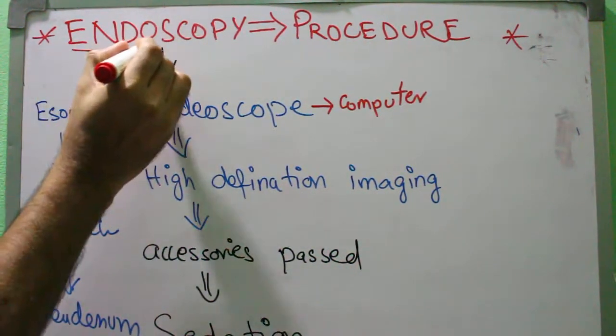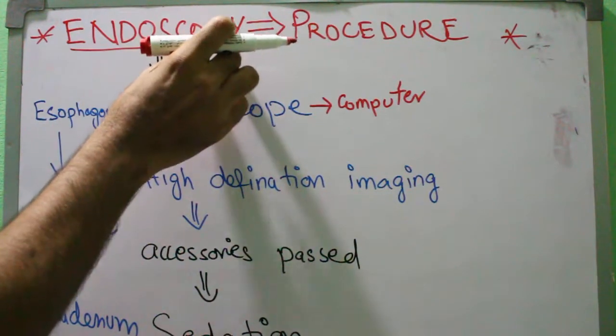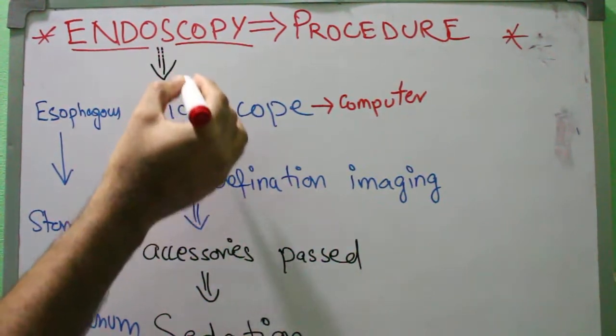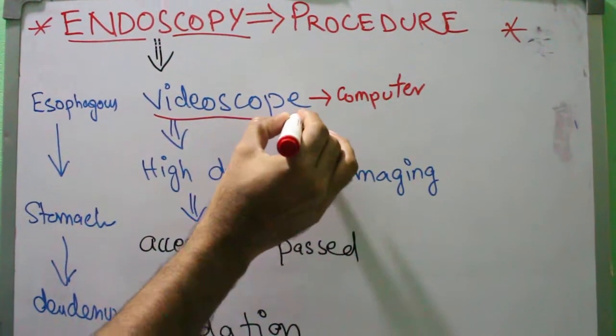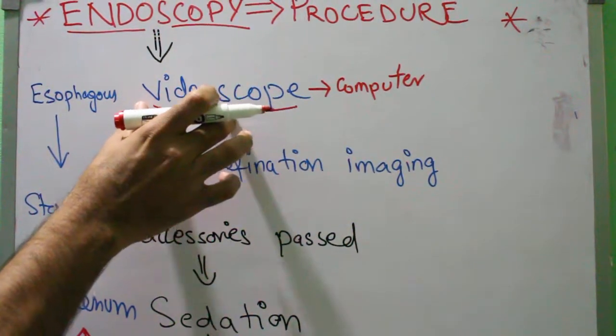Endo means inside, scopy means taking pictures and making a video. The first step is the videoscope, where the doctor with the help of technicians makes a video.